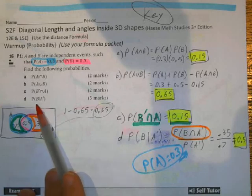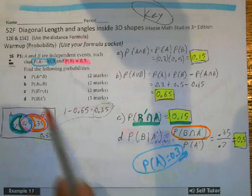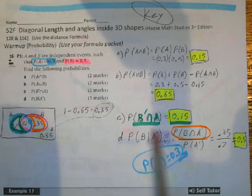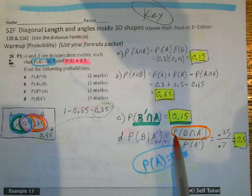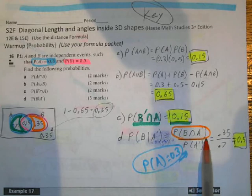Question D. The probability of being in B, given that you're not in A. So using my formula packet, I could say, what's the probability of being in B, intersection with A prime, divided by the probability of being in A prime.